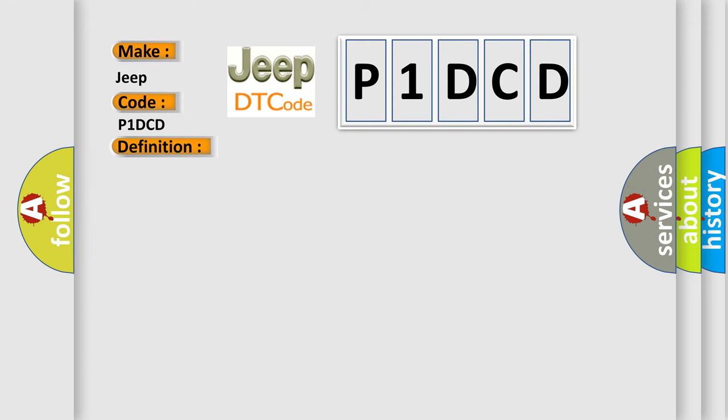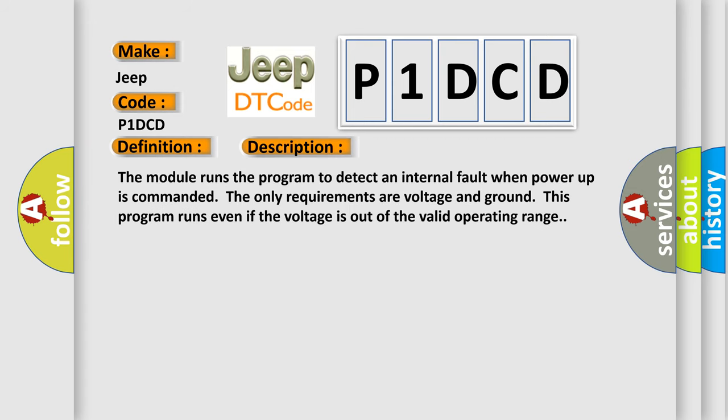And now this is a short description of this DTC code. The module runs the program to detect an internal fault when power-up is commanded. The only requirements are voltage and ground. This program runs even if the voltage is out of the valid operating range.